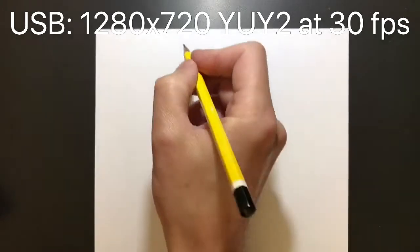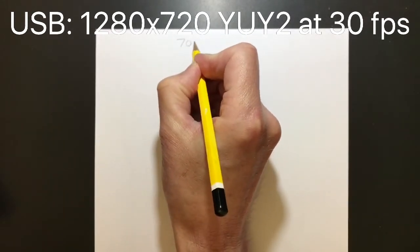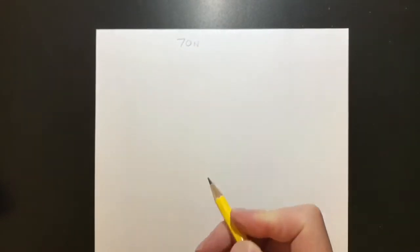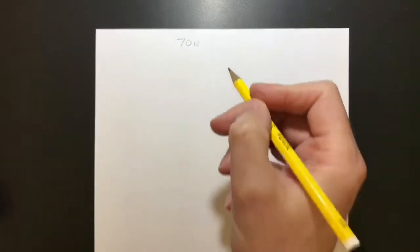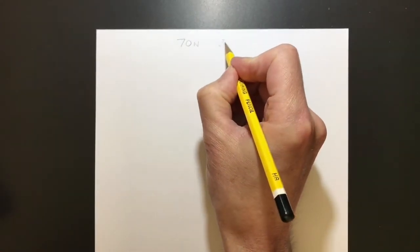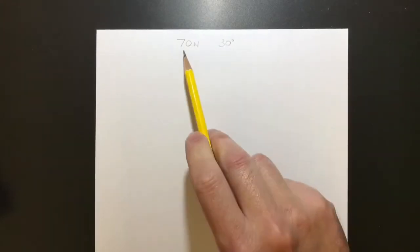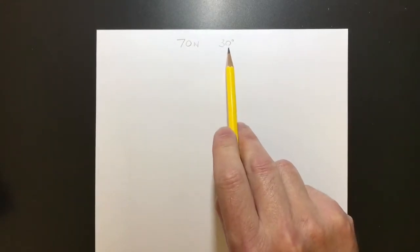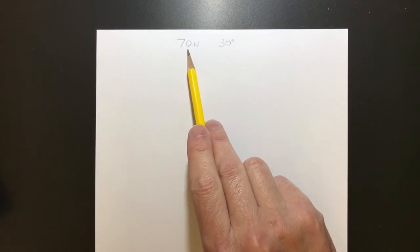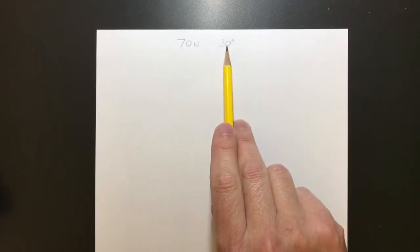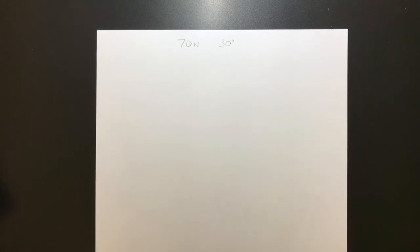So we're going to take a 70 Newton force and we're going to have that force acting in a direction of 30 degrees. So this is our magnitude: we have a magnitude of 70 Newtons and a direction of 30 degrees. And if we have magnitude and direction, then we know it's a vector.